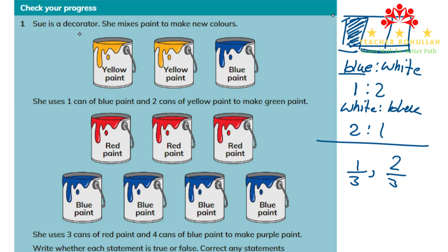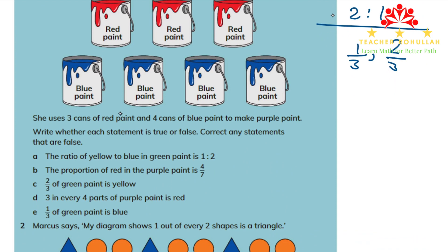Let's now move to question one. Sue is a decorator who mixes paint to make new colors. She uses one can of blue paint and two cans of yellow paint to make green paint, and three cans of red paint and four cans of blue paint to make purple paint. We need to write whether each statement is true or false and correct the false ones. Statement A says the ratio of yellow to blue in green paint is one to two. This is false.